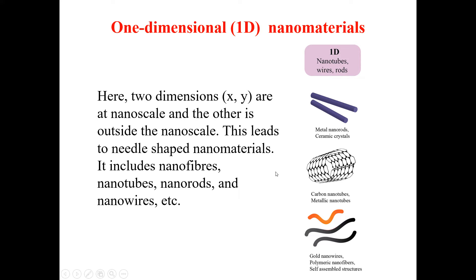Next we have one-dimensional nanostructures. For one-dimensional nanomaterials, two dimensions — X and Y — are at the nanoscale, while the third dimension is outside the nanoscale. In other words, two dimensions lie below 100 nanometers and the third dimension is greater than 100 nanometers.